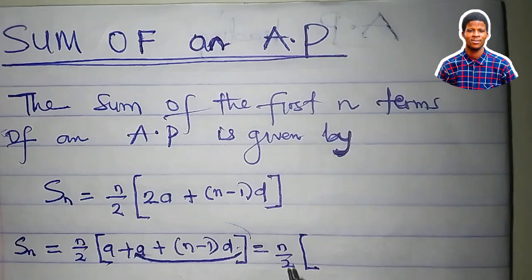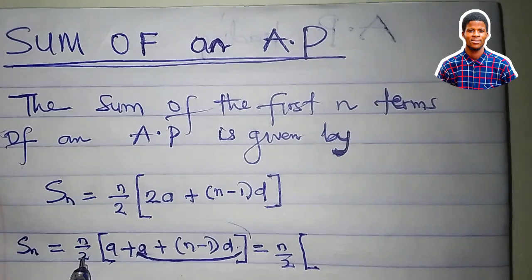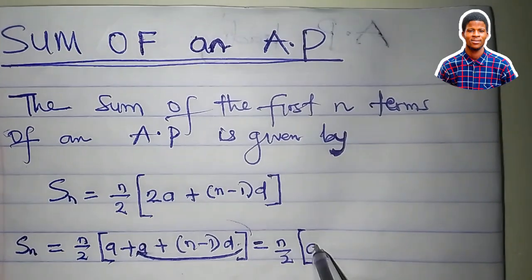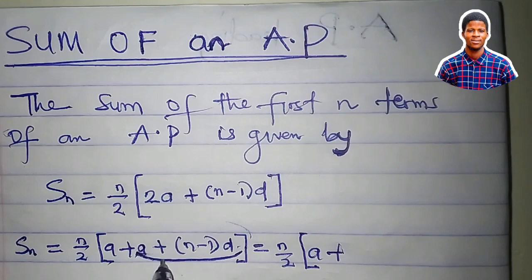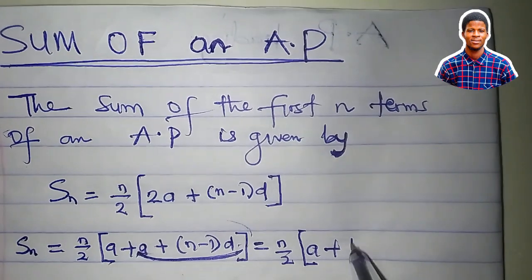So this formula now can be written as S_n equals n over 2, in brackets, a plus, in place of everything here, I will put l,